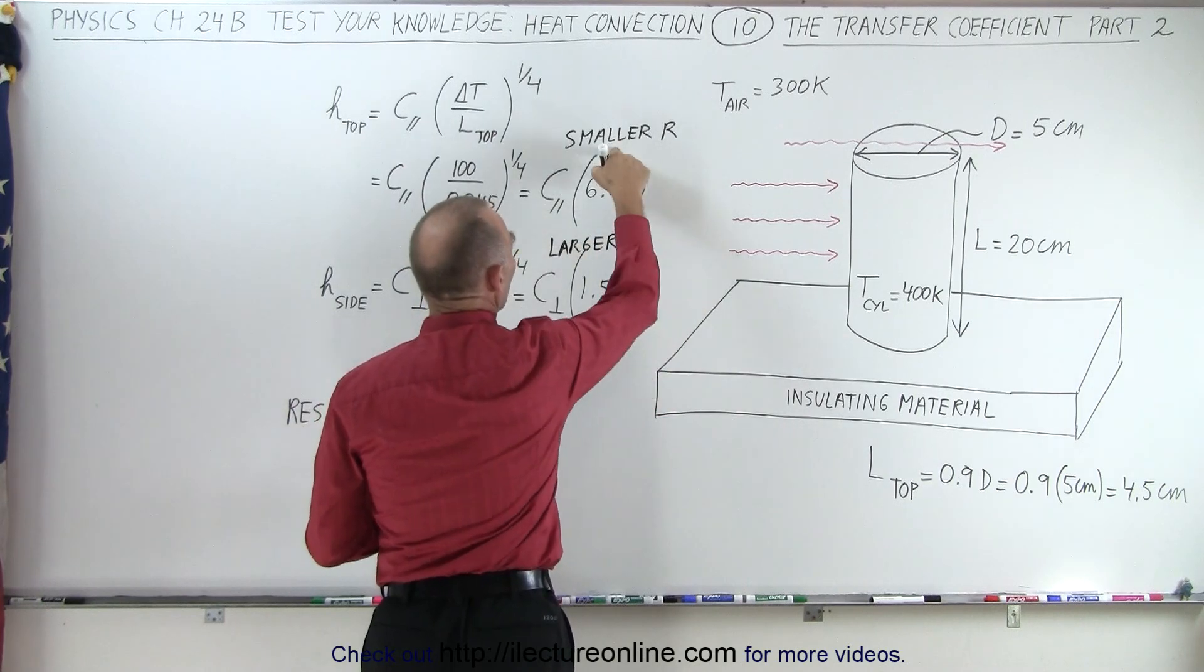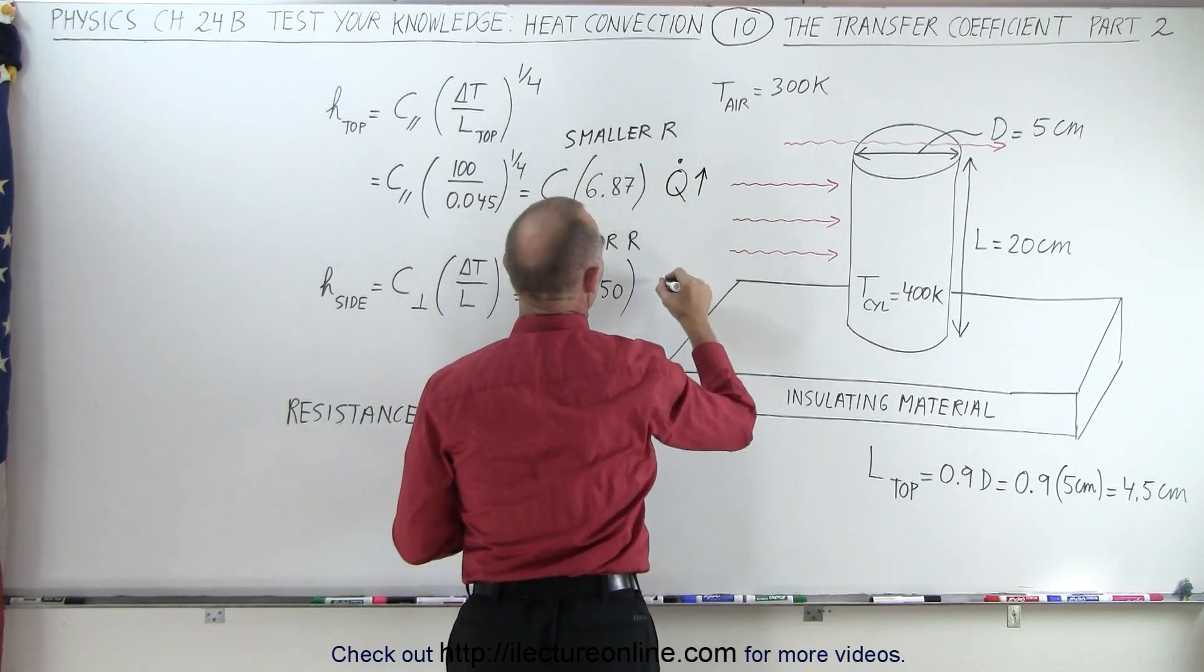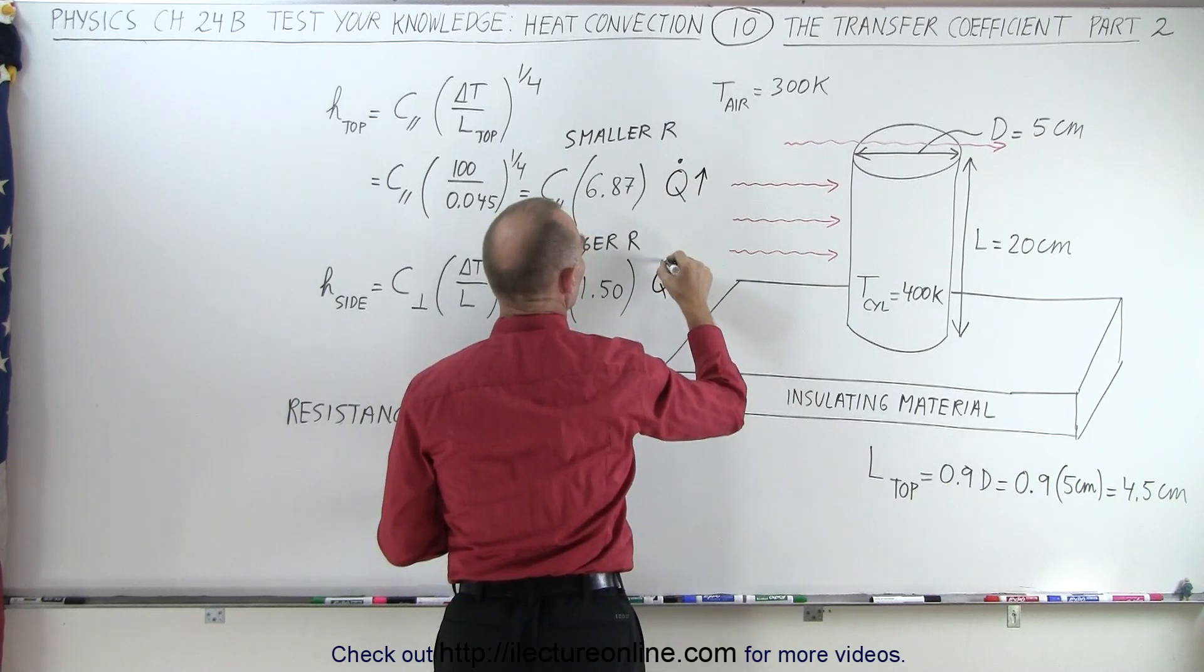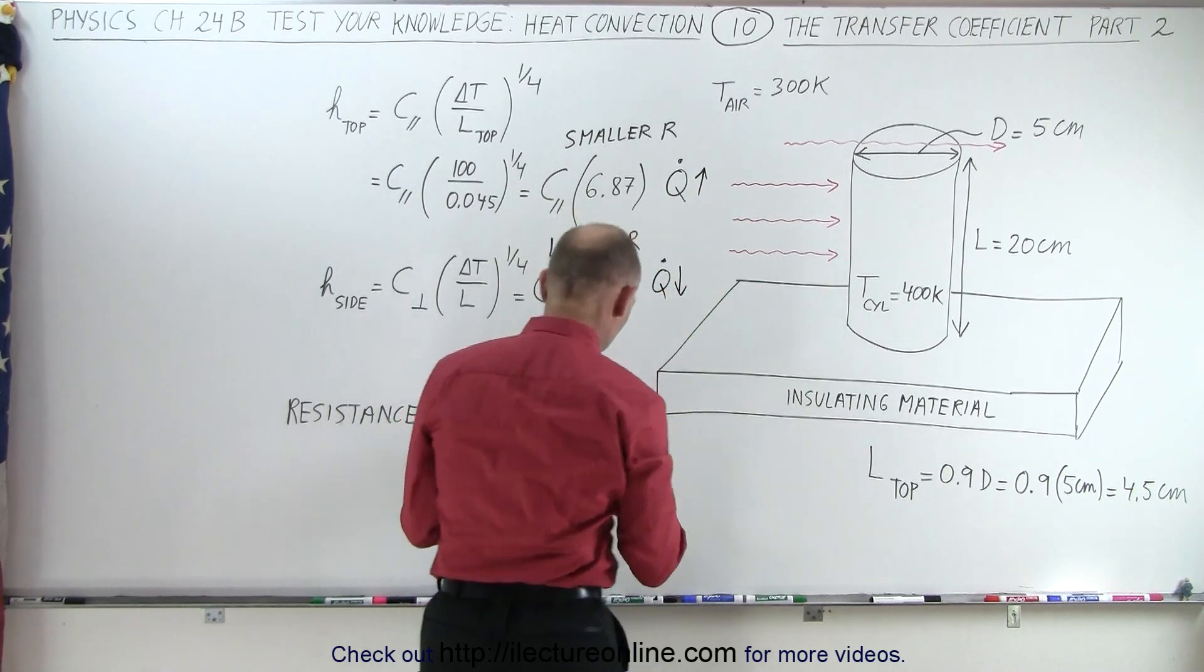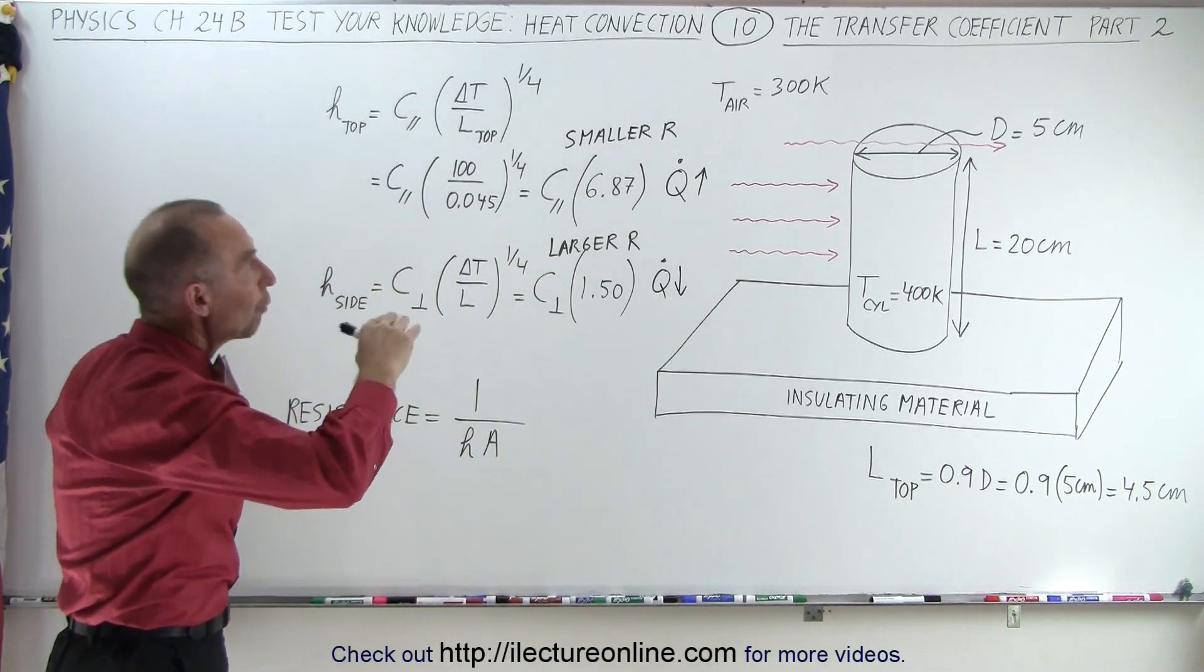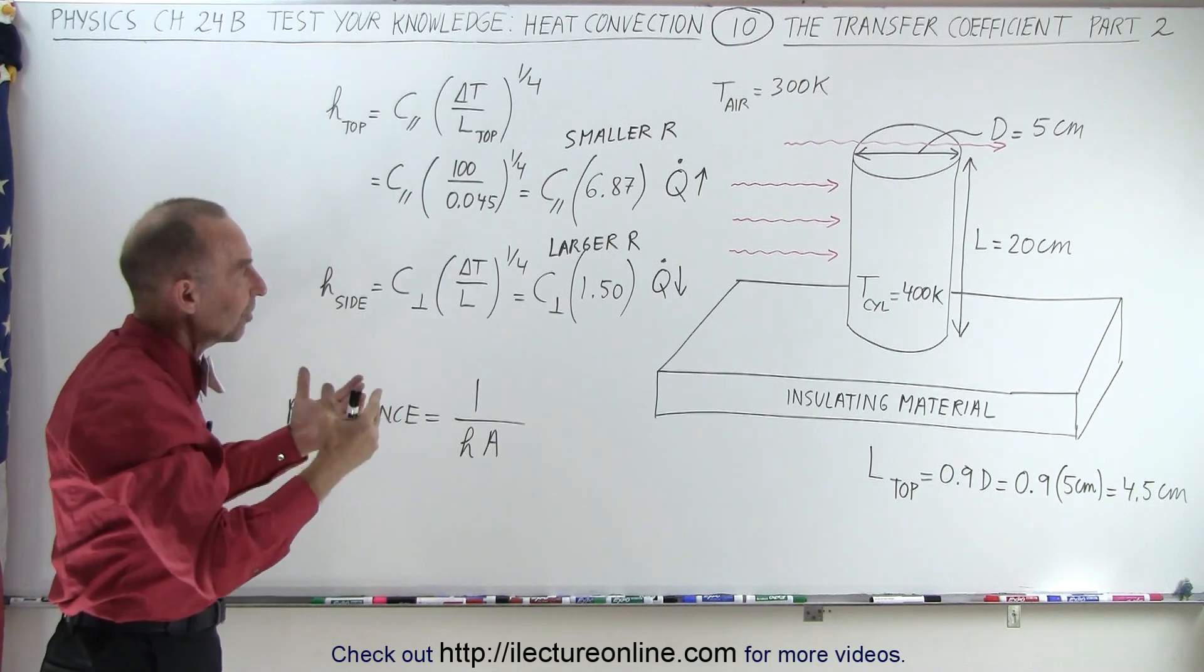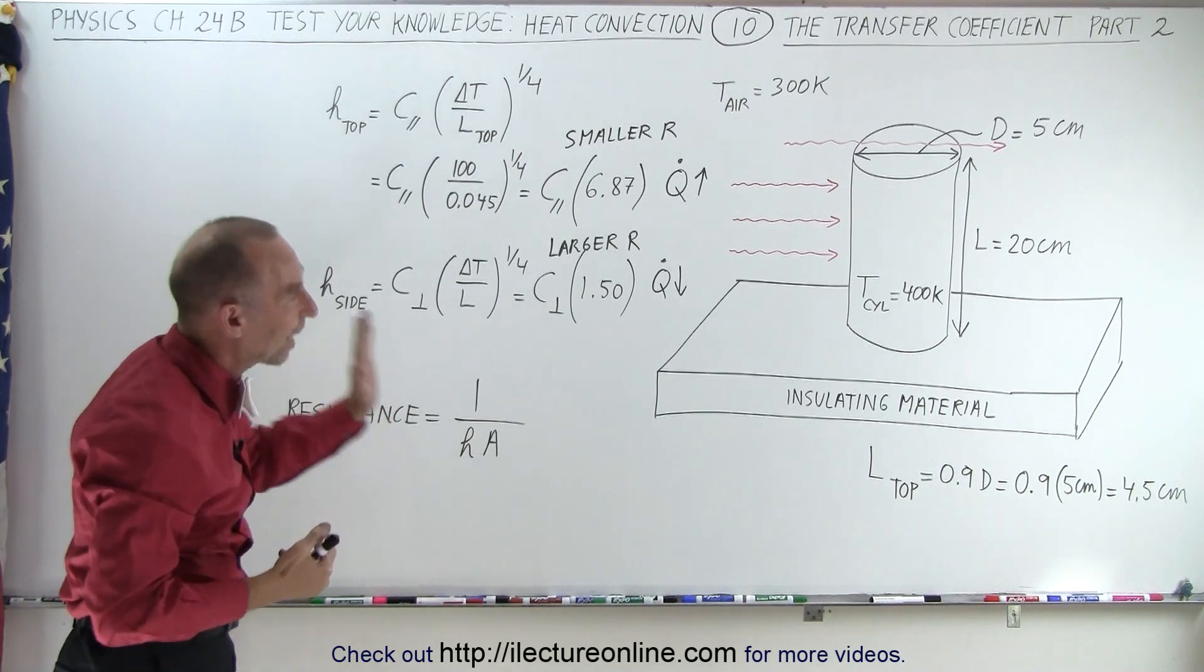And a smaller R means higher heat flow. So Q dot is greater, and this larger R means Q dot is smaller, which means we have a higher heat flow from the top of the cylinder in comparison relative to the size than we do on the sides of the cylinder.